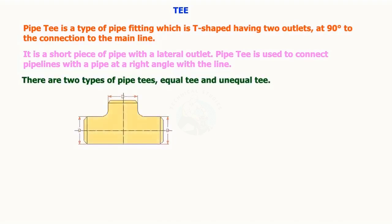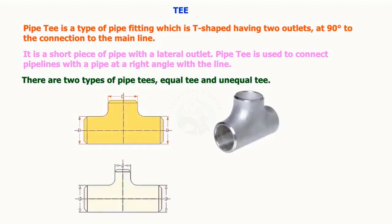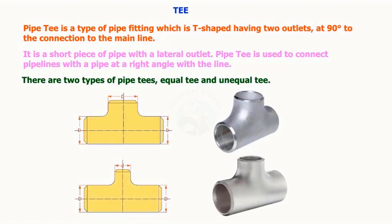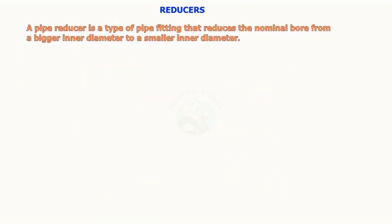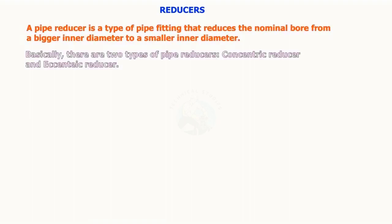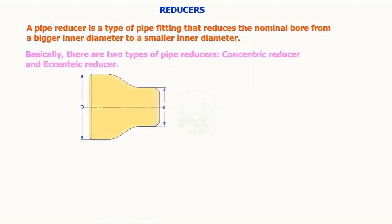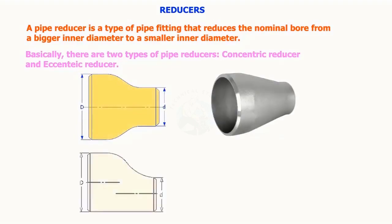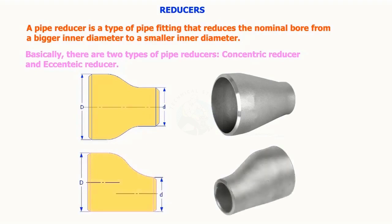A pipe reducer is a type of pipe fitting that reduces the nominal bore from a bigger inner diameter to a smaller inner diameter. Basically, there are two types of pipe reducers: concentric reducer and eccentric reducer.